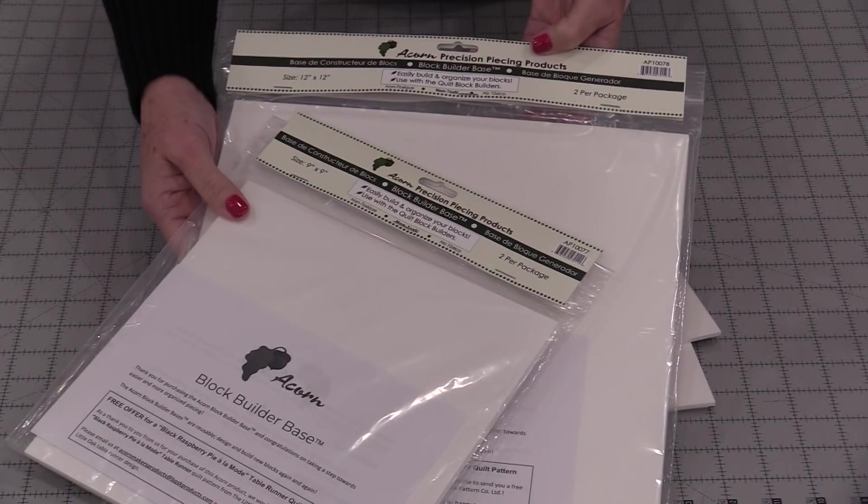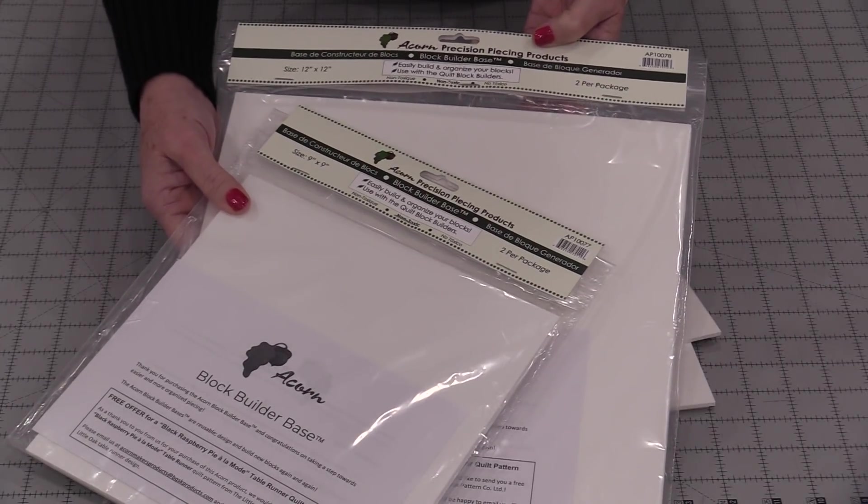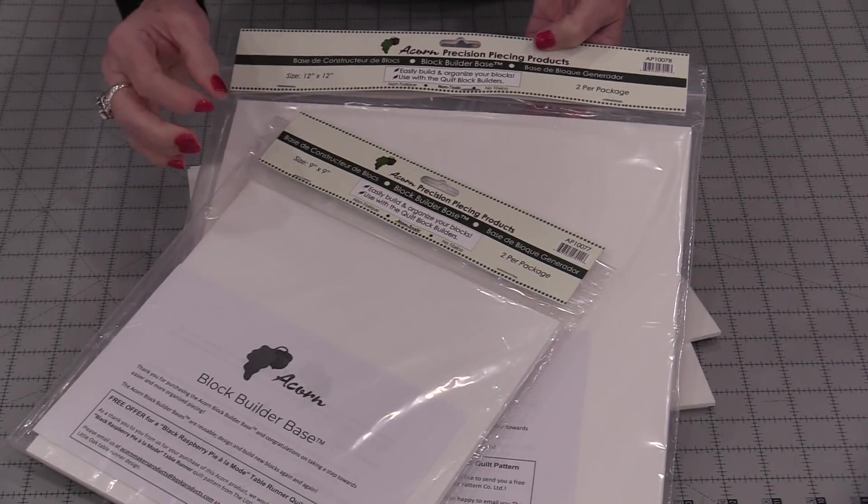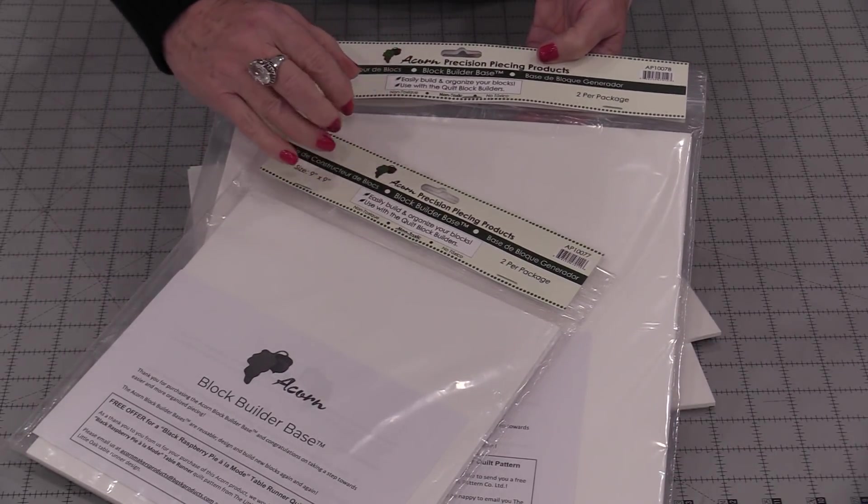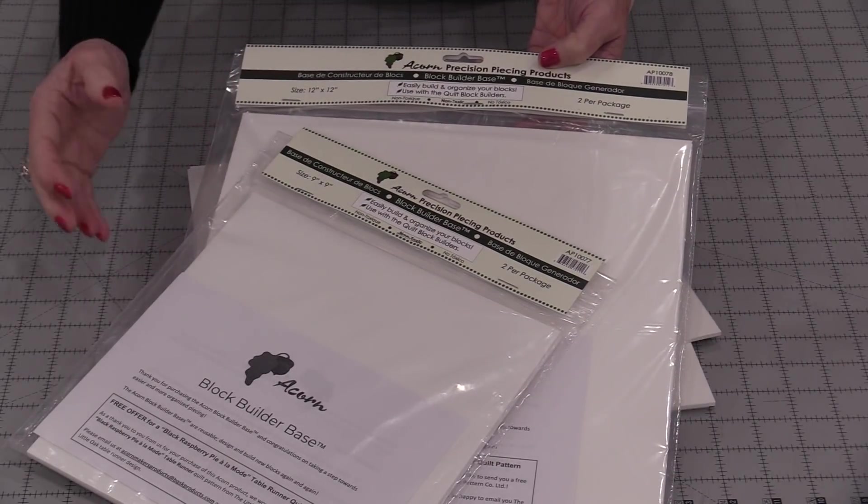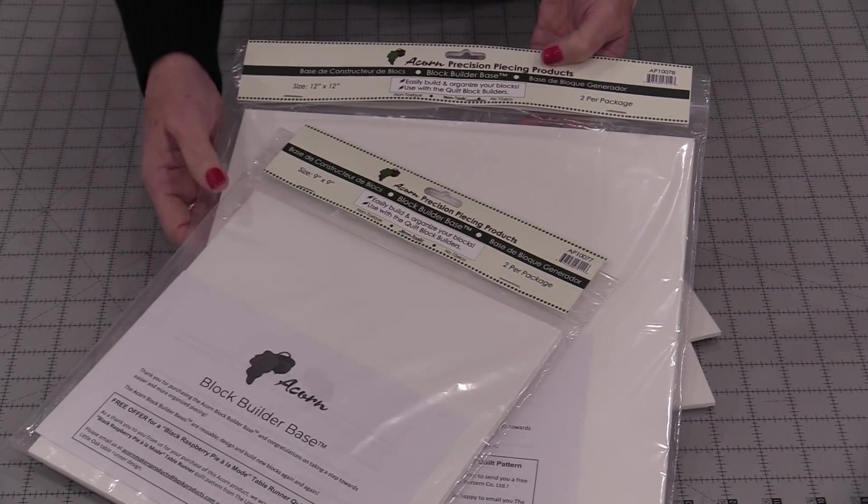That organization also helps us make less mistakes and there's a block builder base that's going to help us stay organized and help us make less mistakes. These block builder bases are like miniature design walls. We're going to be able to use these to organize during the cutting, as we're stitching, and as we are putting the blocks together.